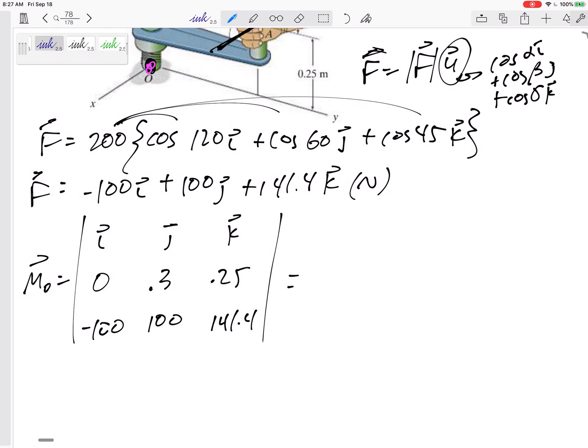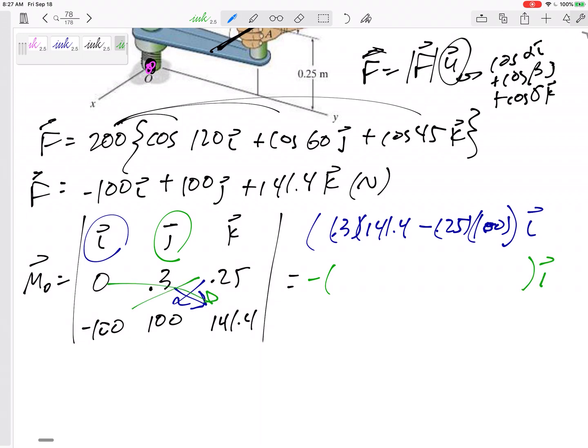So this is going to be, my i component is going to be 0.3 times 141.4 minus 0.25 times 100. And then the j component - minus the j component - which is 0 minus 0.25 times negative 100. And plus my k component is going to be that minus that: 0 minus 0 minus 0.3 times negative 100.